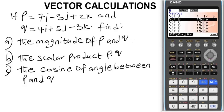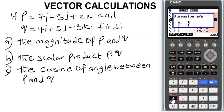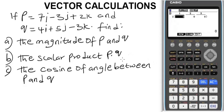Now for vector Q, which is our vector B on this calculator, the dimension is also 1 by 3. Note that since this question has i, j, and k unit vectors, it is a 1 by 3 dimensional vector. The values for vector Q are 4, 5, and minus 3.